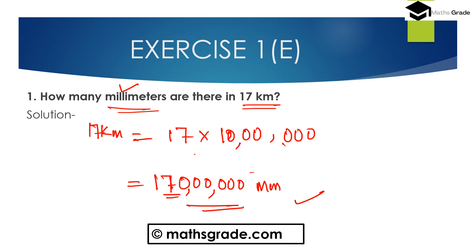So seventeen kilometers is seventeen multiplied by ten lakh. Counting the digits: one, two, three, four, five, six zeros — so it is one crore seventy lakh millimeters. Therefore, 17 kilometers is one crore seventy lakh millimeters.